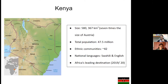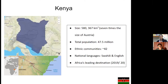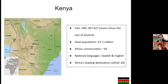I'd like to give you a brief overview about Kenya. Kenya is a very beautiful country located on the east coast of Africa. It is about 580,000 kilometers squared — roughly seven times the size of Austria. According to the last 2019 census, the current population in Kenya is 47.5 million inhabitants.